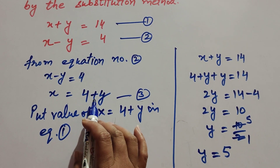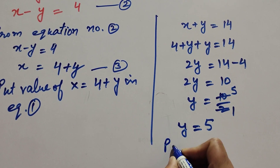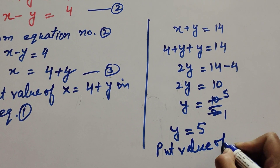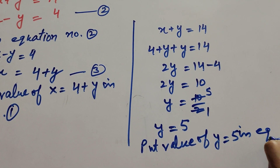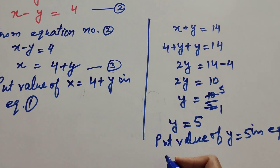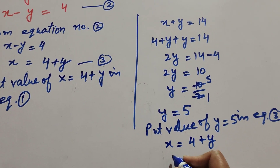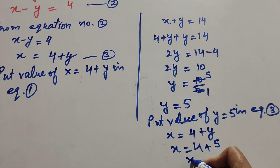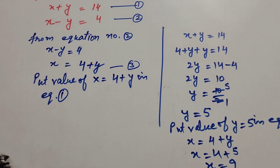Now we put the value of y equal to 5 into equation 3, which is x equal to 4 plus y. Substituting gives x equal to 4 plus 5, so x is equal to 9.